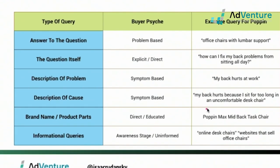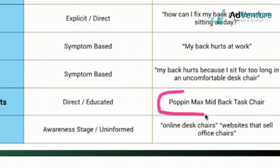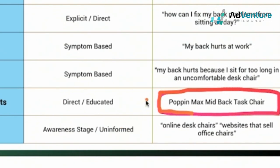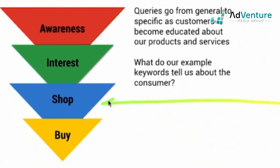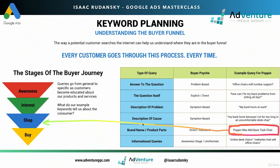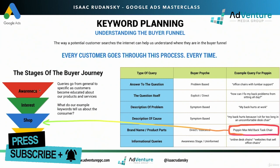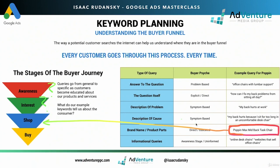Now we take a totally different type of search term: brand name, product names — 'Poppin Max Mid-Back Task Chair.' Where does this fall on the buyer's funnel? You should know this right away. Obviously they're shopping. Obviously the person has already expressed interest and is already cognitively aware of the problem. What they view as the problem isn't even important to us anymore. That's another important thing to focus on.